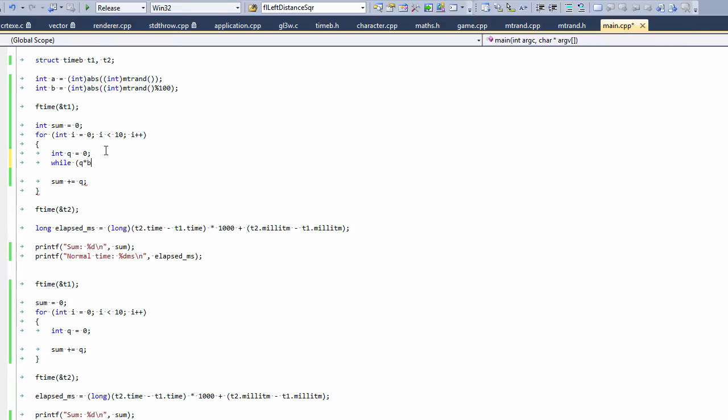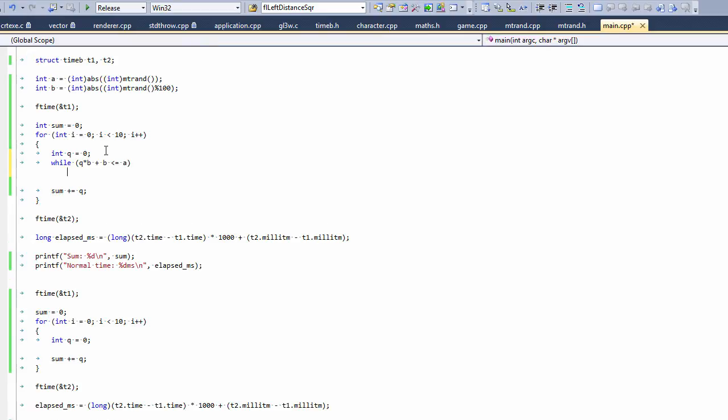So let's start writing our algorithm on Q times B plus B is less than or equal to A. Then we increment equals Q plus one. We increment Q by one. And we're going to do the same thing down here, except we're going to increment it by two.